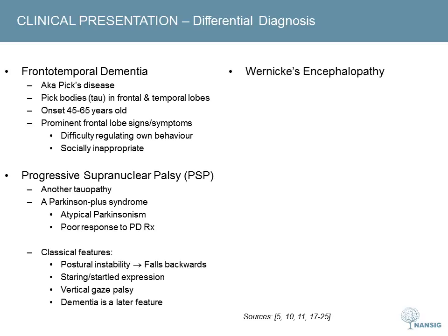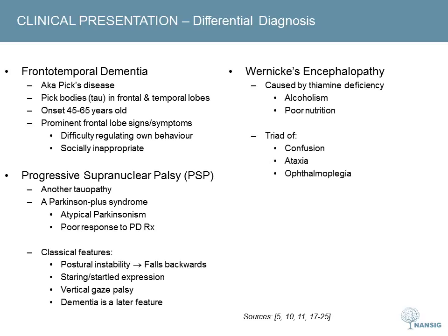Wernicke's encephalopathy is caused by thiamine deficiency, typically in the context of chronic alcoholism or poor nutritional intake. Classically, it presents with a triad of confusion, ataxia, and ophthalmoplegia. If not treated quickly or aggressively enough with IV thiamine, Korsakoff syndrome can emerge. Korsakoff syndrome is associated with damage to the mammillary bodies and involves severe anterograde amnesia — the patient can no longer lay down new memories. Confabulation is also commonly observed, whereby patients unknowingly fill in memory lapses, possibly with details from intact legitimate memories.